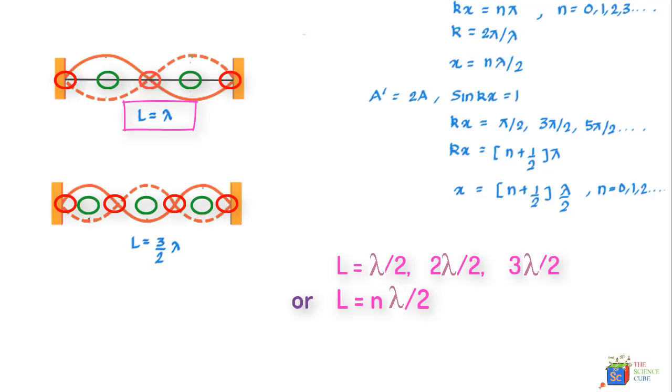So we can set up a standing wave on a string of length L with a wave that have wavelengths equal to one of the values below. That is lambda is equal to 2L upon N for N is equal to 1, 2, 3 and so on.